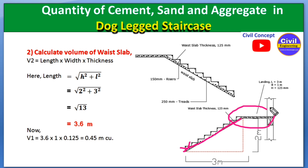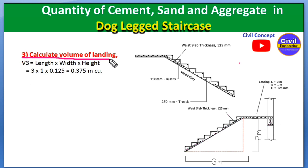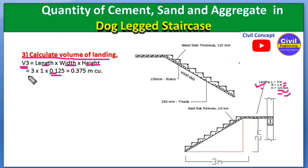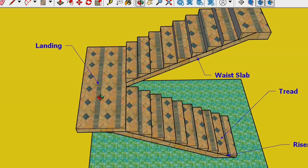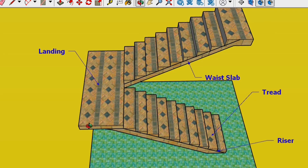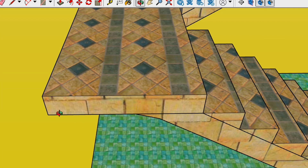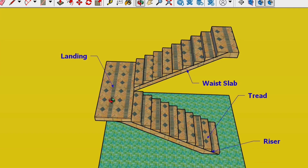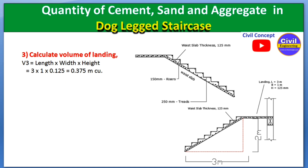In step three, we calculate the volume of the landing. The formula is V3 = length × width × height. From the figure and 3D model, the length of the landing is 3 m, the width is 1 m, and the thickness is 125 mm (0.125 m). Multiplying these gives 0.375 m³ as the volume of the landing.